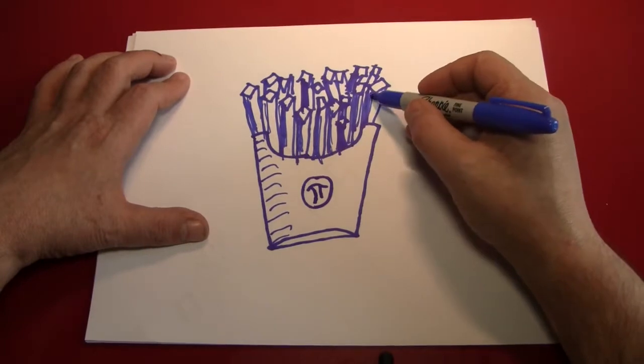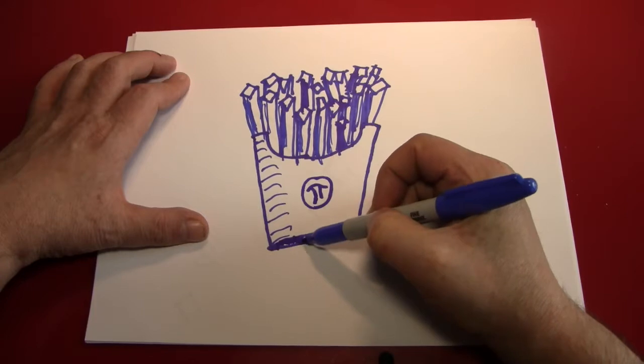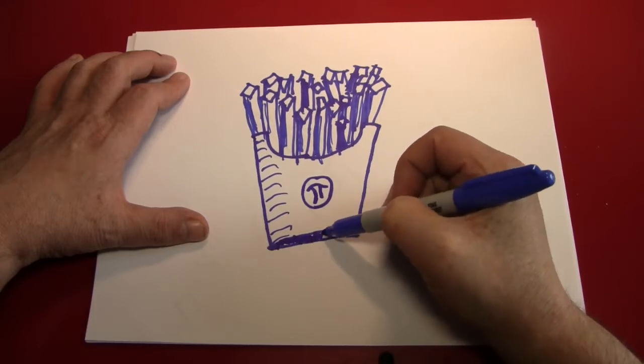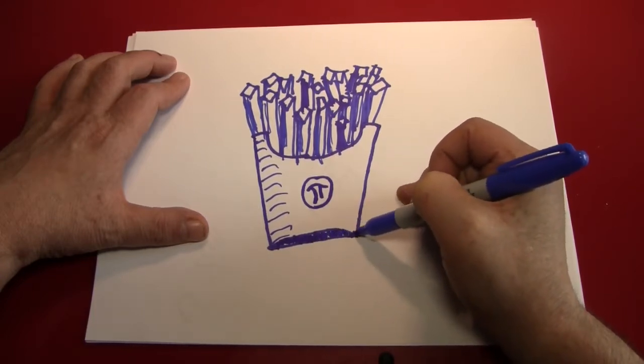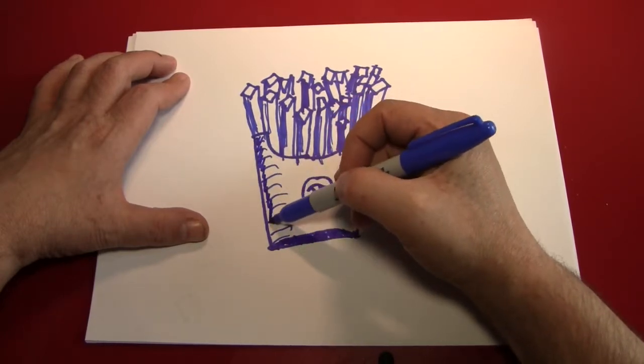They're pie fries, I guess. Color in the bottom, if you want. I like to do that. Maybe even just a little extra shadowing right around the edge, like that.